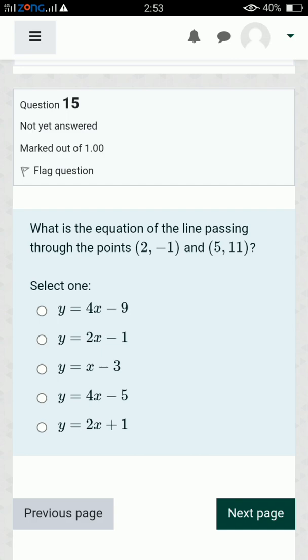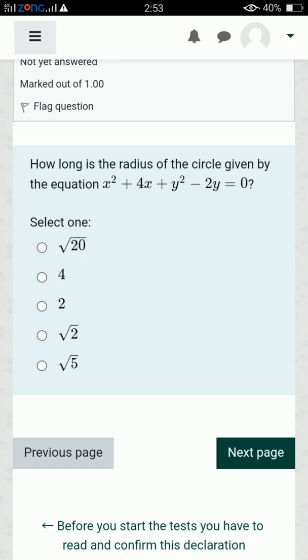Next one is: What is the equation of the line passing through the points (2, -1) and (5, 11)?